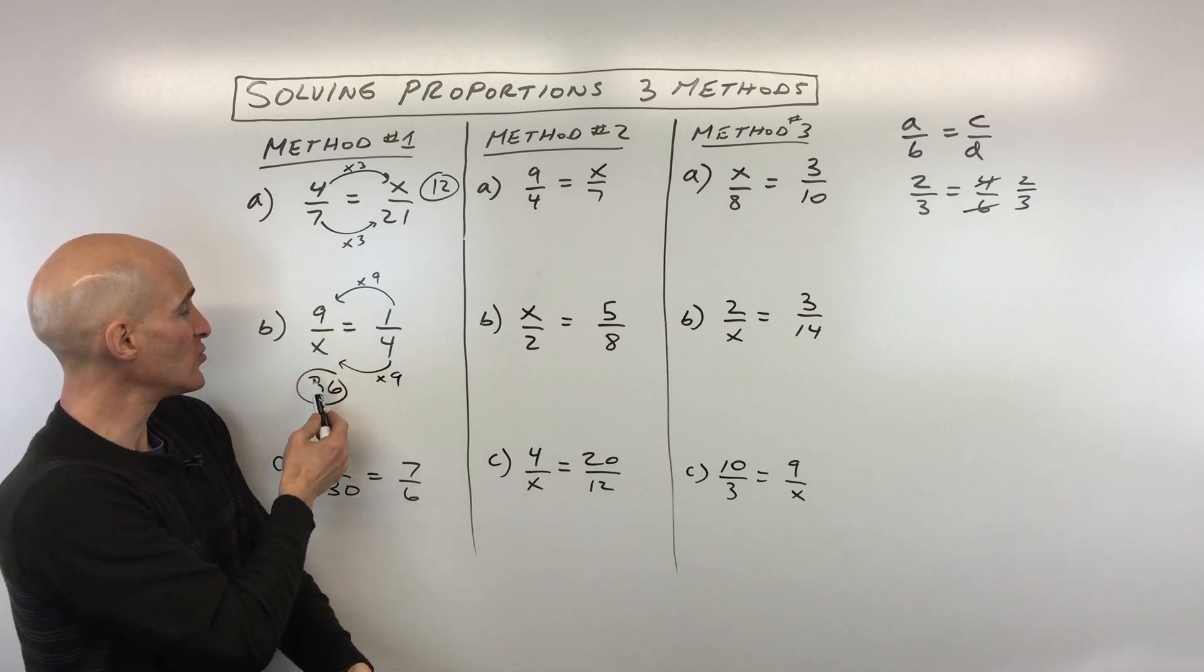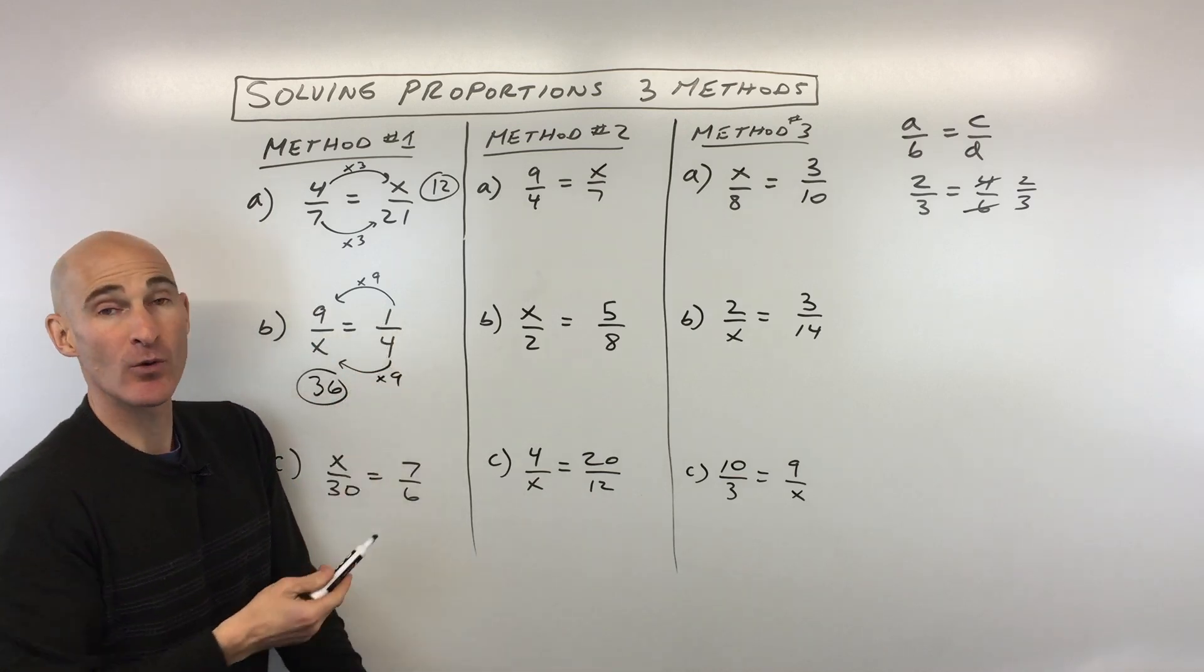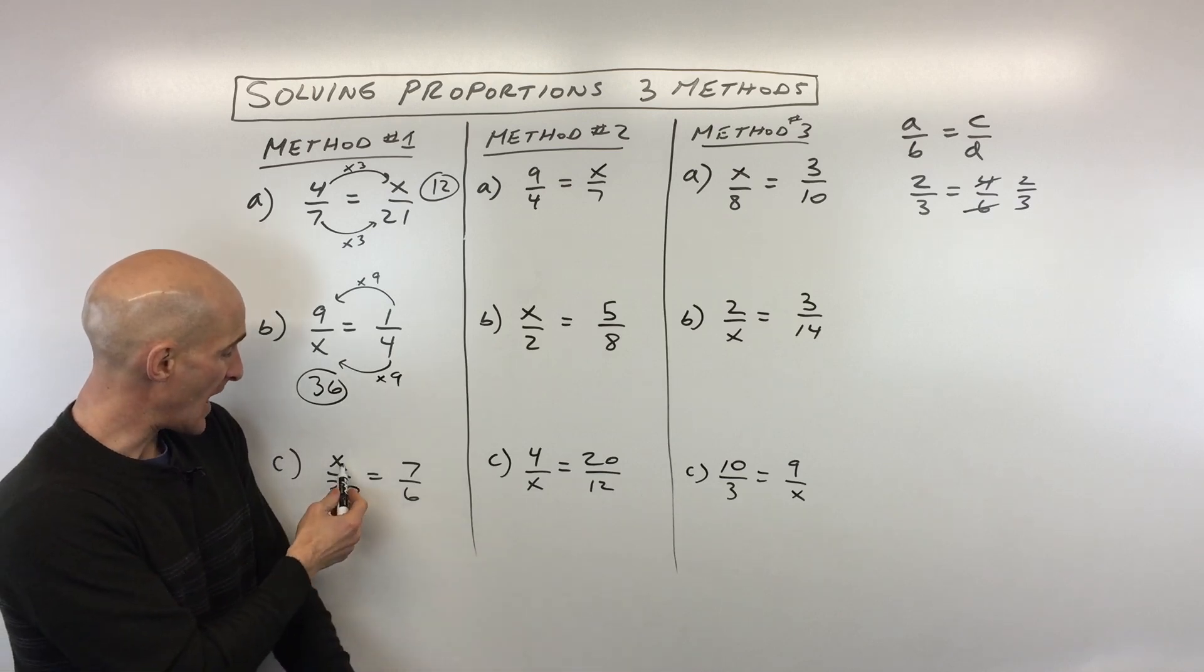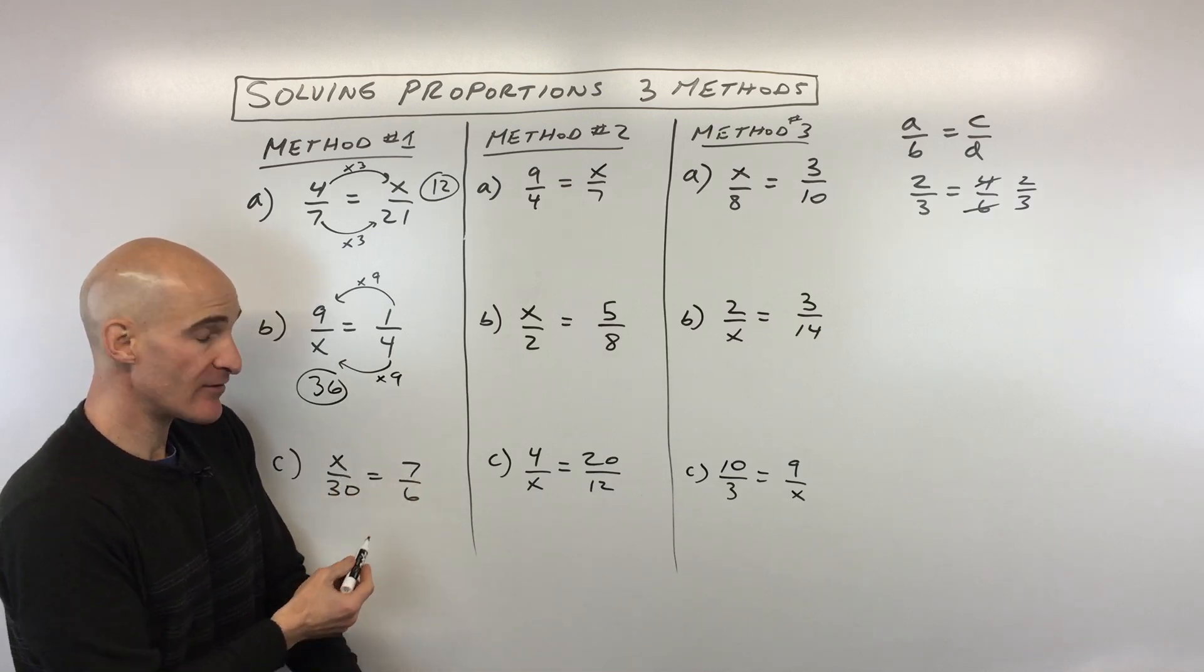So that's our unknown quantity x equals 36. Again, you can check if you reduce 9/36, you're going to get 1/4. So those are equivalent. Okay, last one, see if you can do this one: x divided by 30 equals 7 divided by 6.